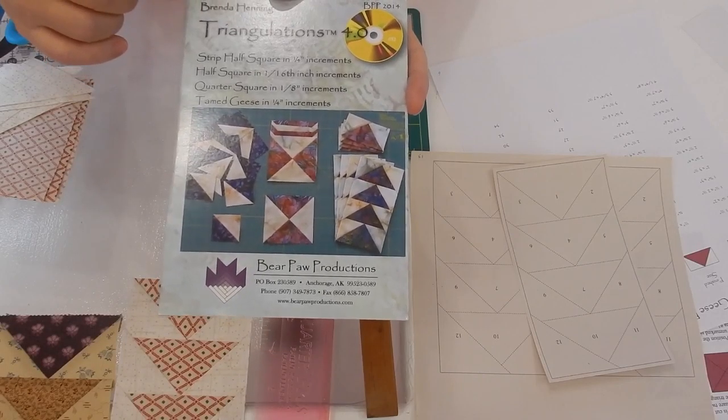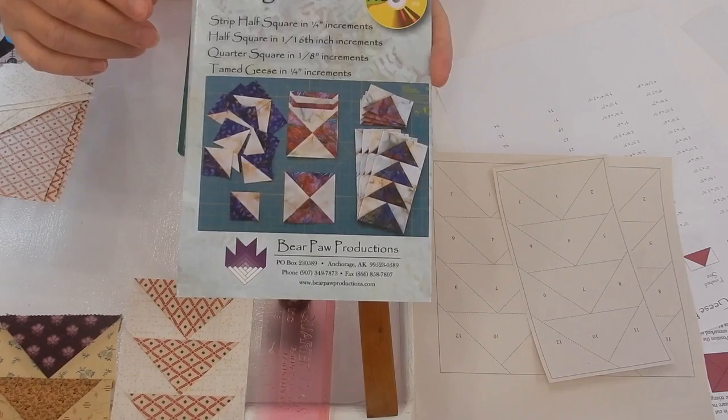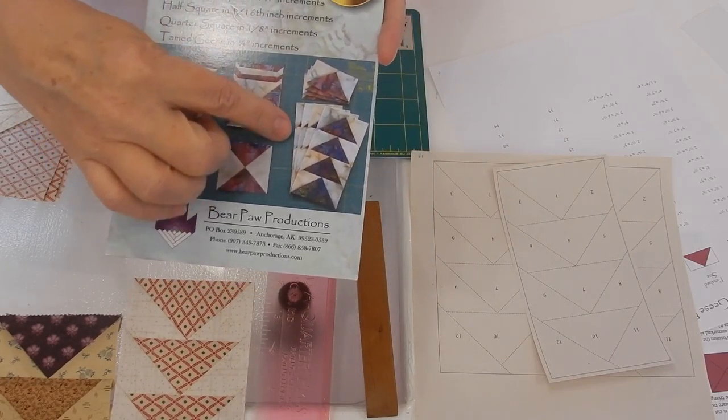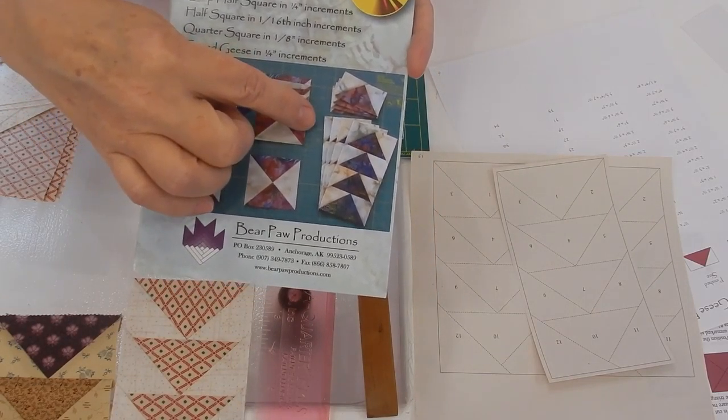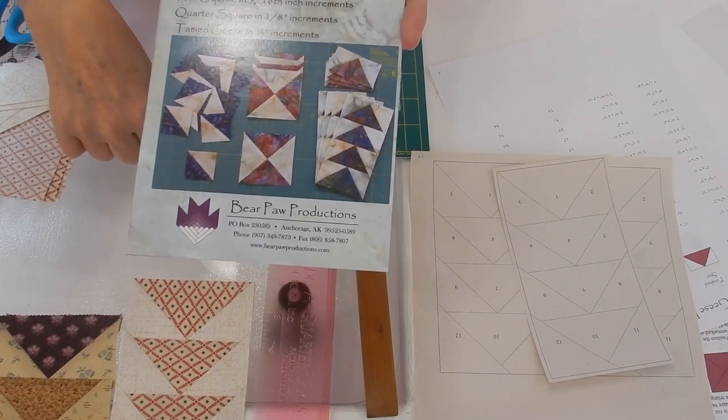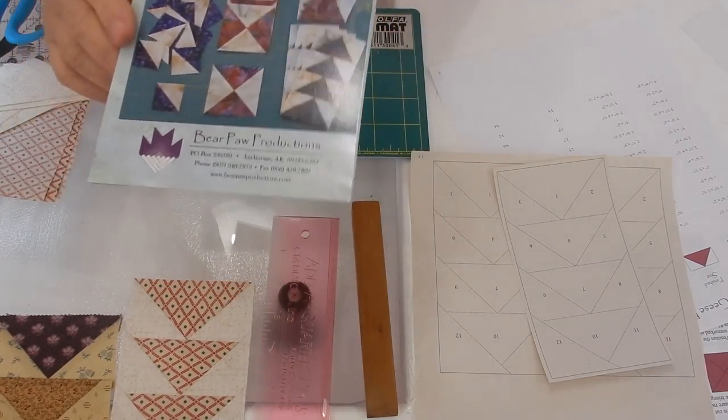I'm doing a finished one and a half by three inch, so let's get started. Today we're going to work on the Triangulation CD. A bunch of you asked me to show you how to make the flying geese with it, so that's what I'm going to do today.